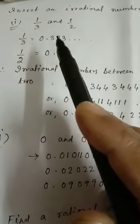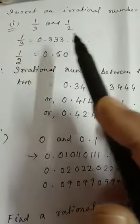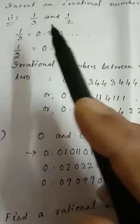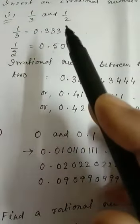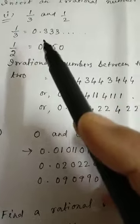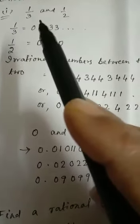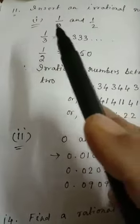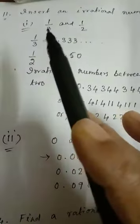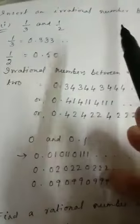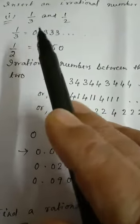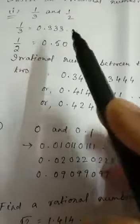Therefore, you can find infinite numbers between two given numbers. Here you have to find the question number. I will take question number 11 here. Given: insert an irrational number between the following. The first question is one-third and half.